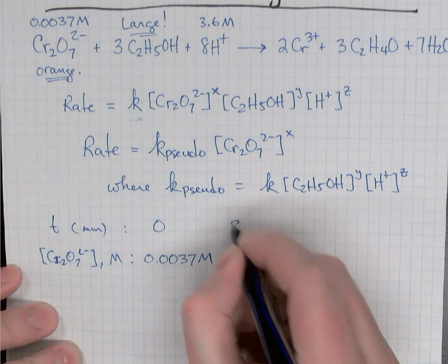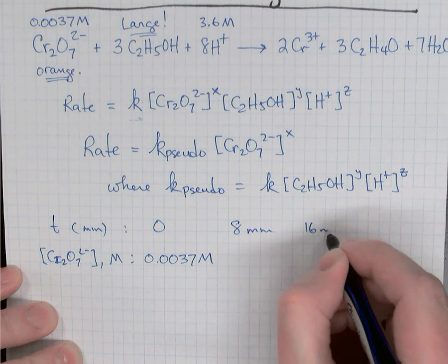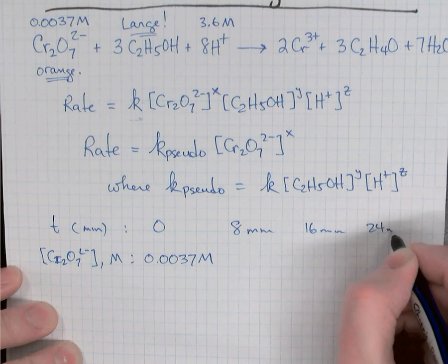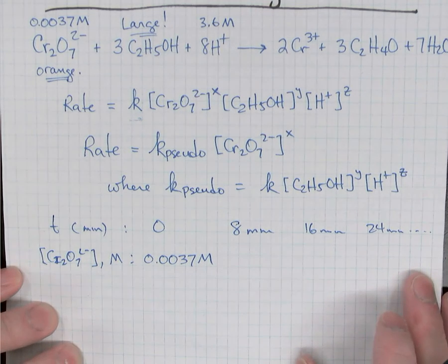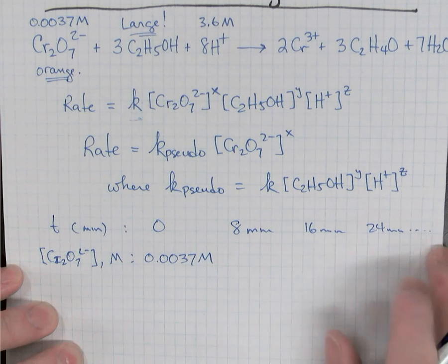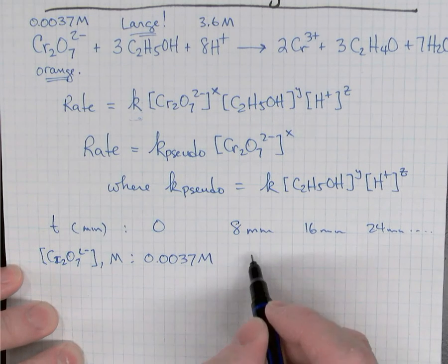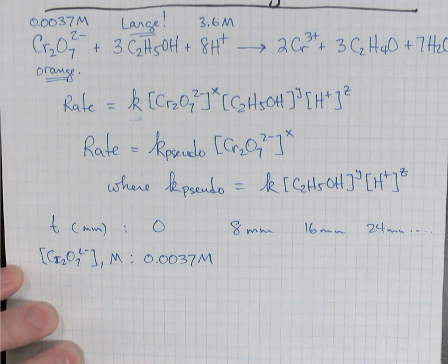So the time intervals are going to be different for each group, but suppose a certain group decided to do it at eight minutes, at 16 minutes, at 24 minutes, etc. You probably had at least five data points, five after the zero point. So what we need to do is calculate the concentration of dichromate at each of these time intervals.